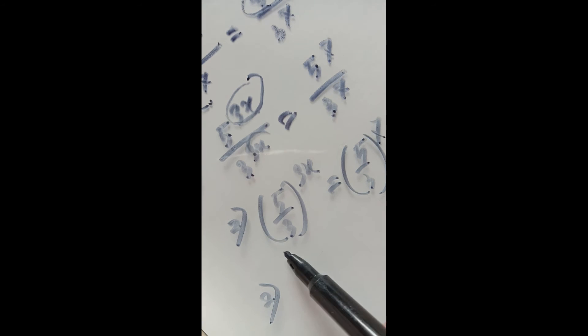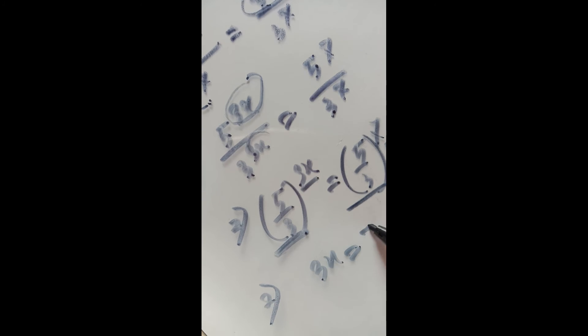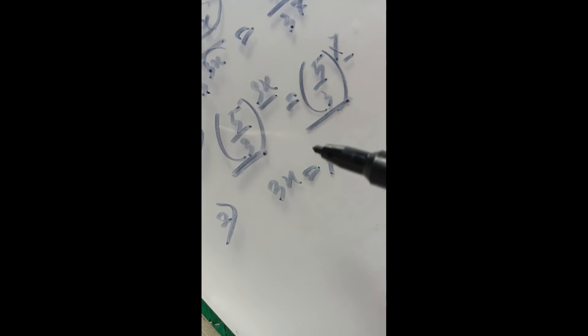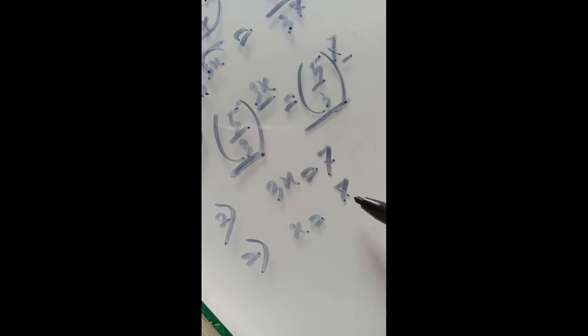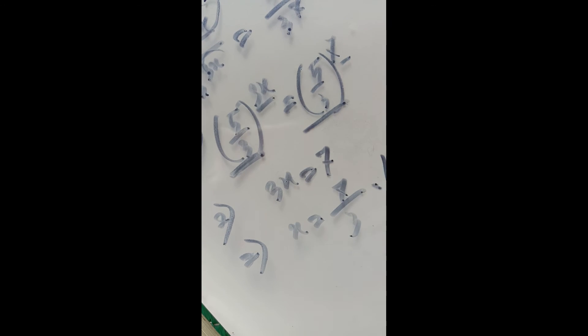Now the base is the same on both sides, so we can equate the exponents. Therefore 3x equals 7, and x equals 7 divided by 3. This is the final answer.